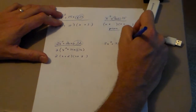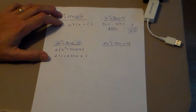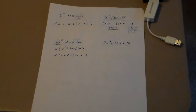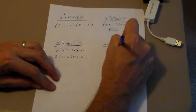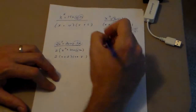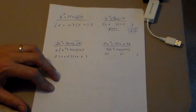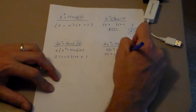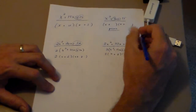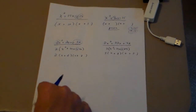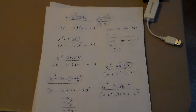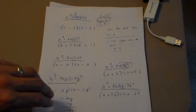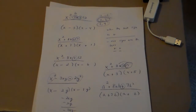Try 3x squared plus 33x plus 72 — pause and try. Take out a GCF of 3 to get x squared plus 11x plus 24. Last sign positive, middle sign positive, so both signs are positive. x and x. Factors of 24 that add to 11: that's 8 and 3. That's 10 problems — a good introduction. If you have questions, send me an email and we'll work it out.